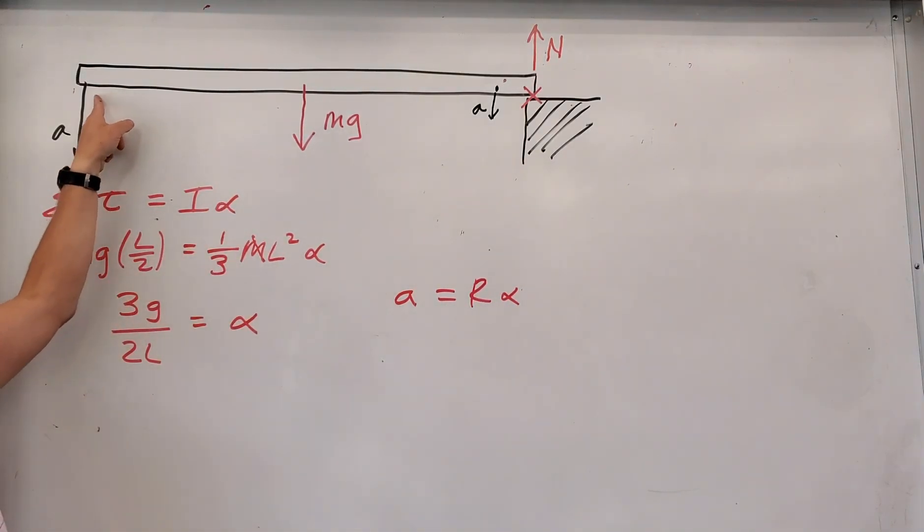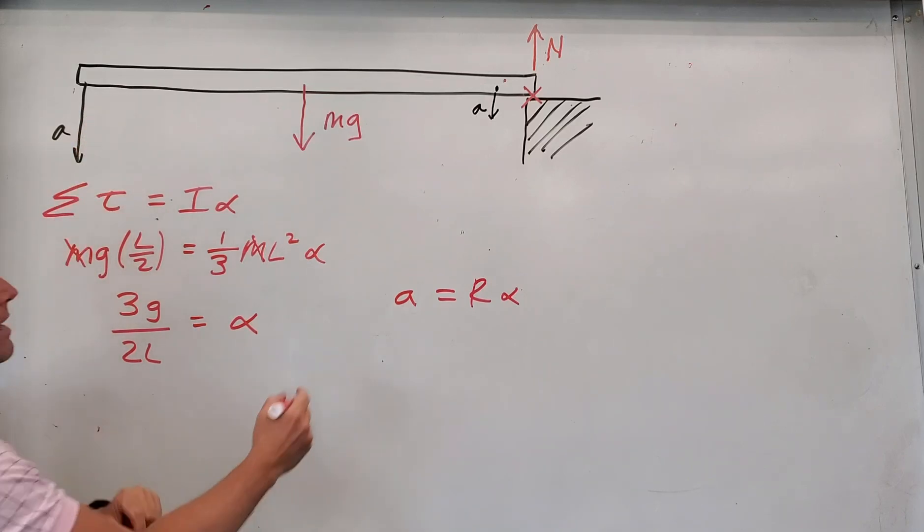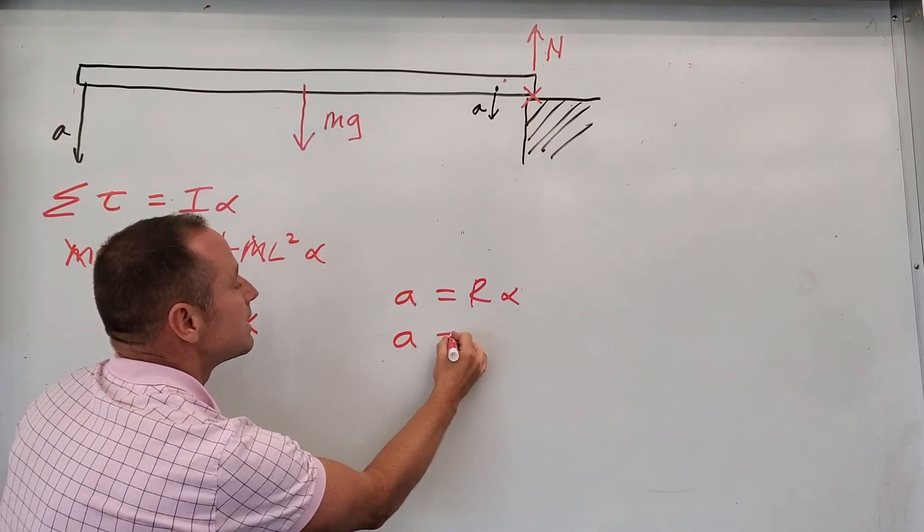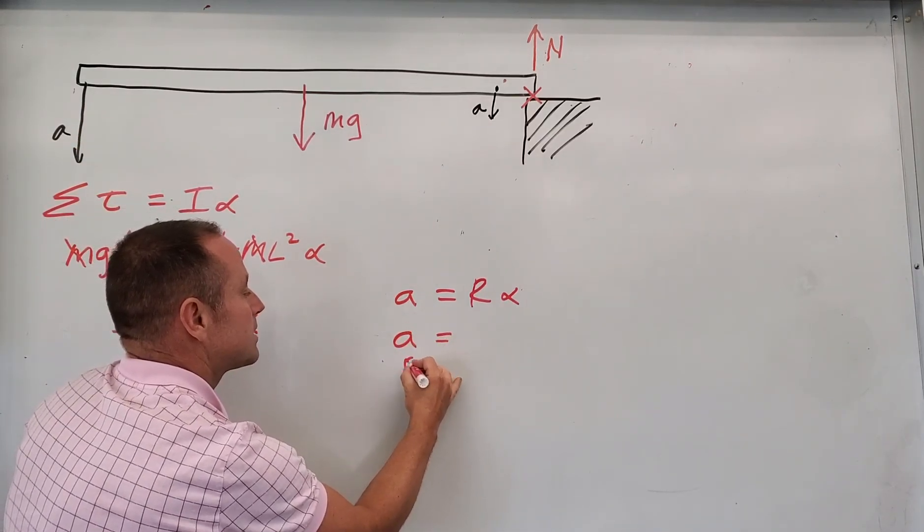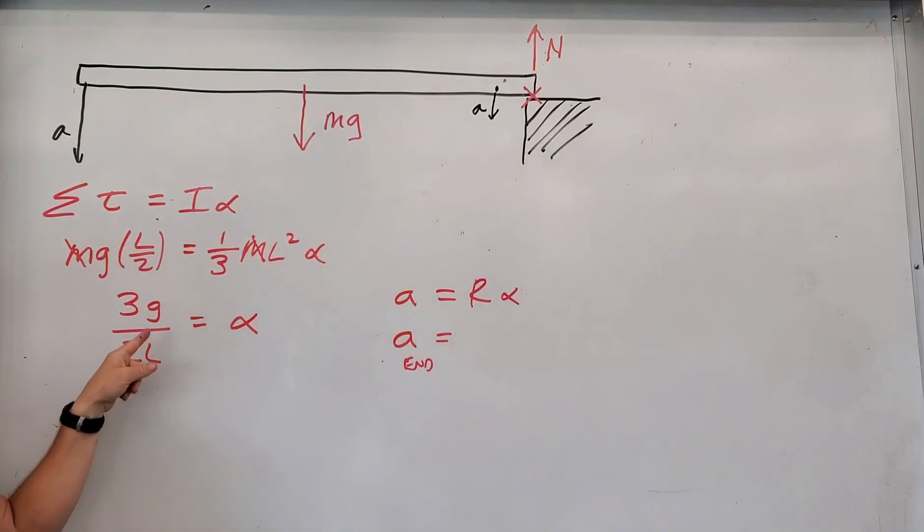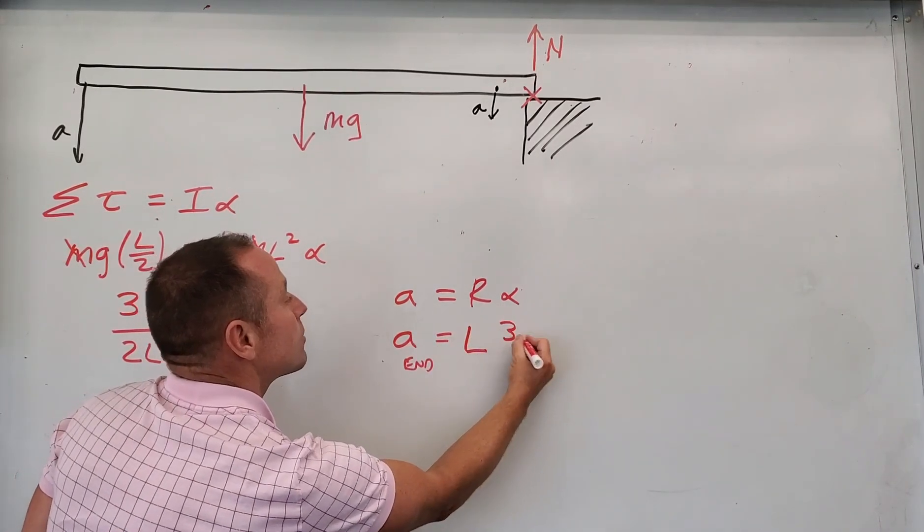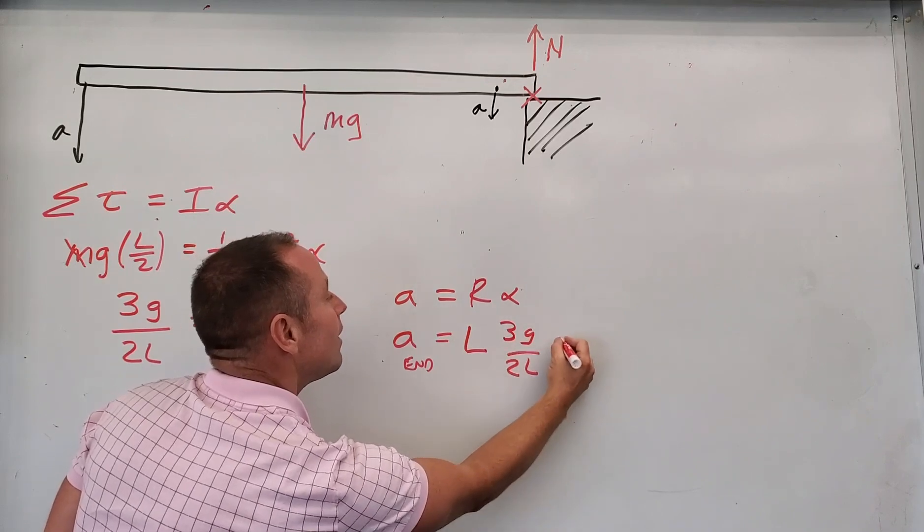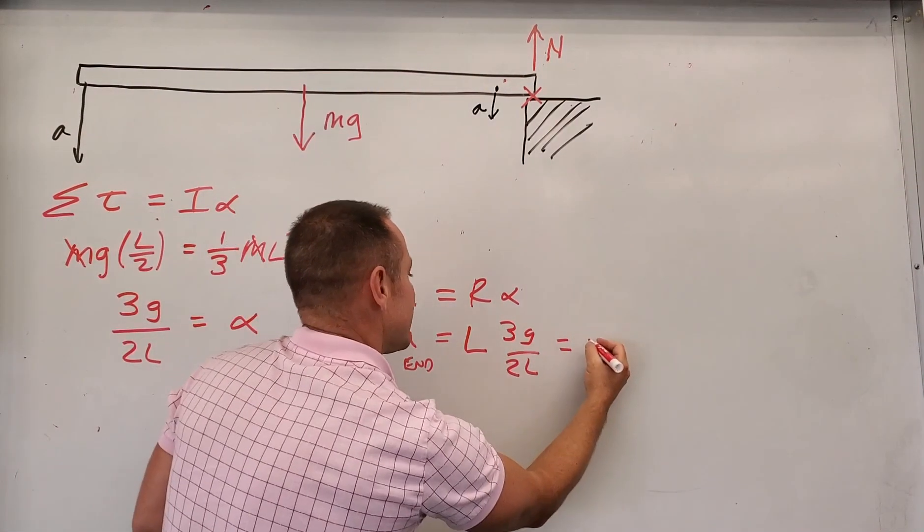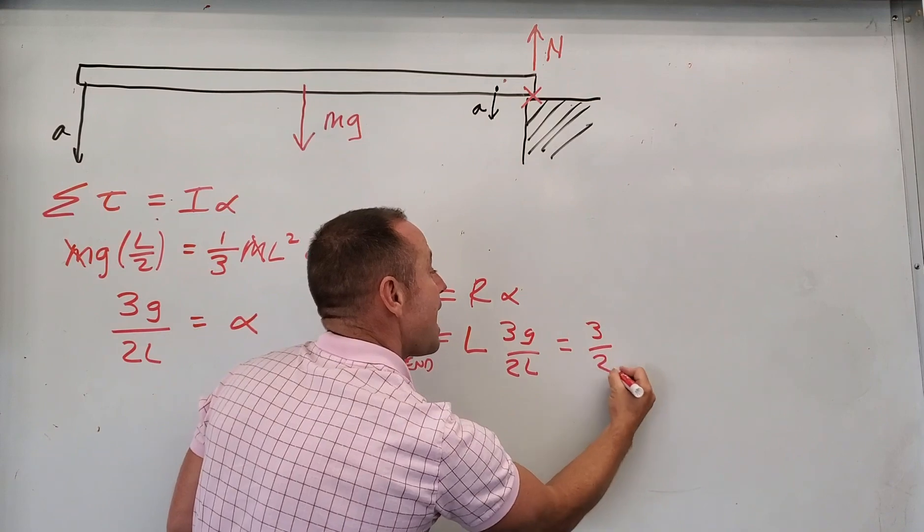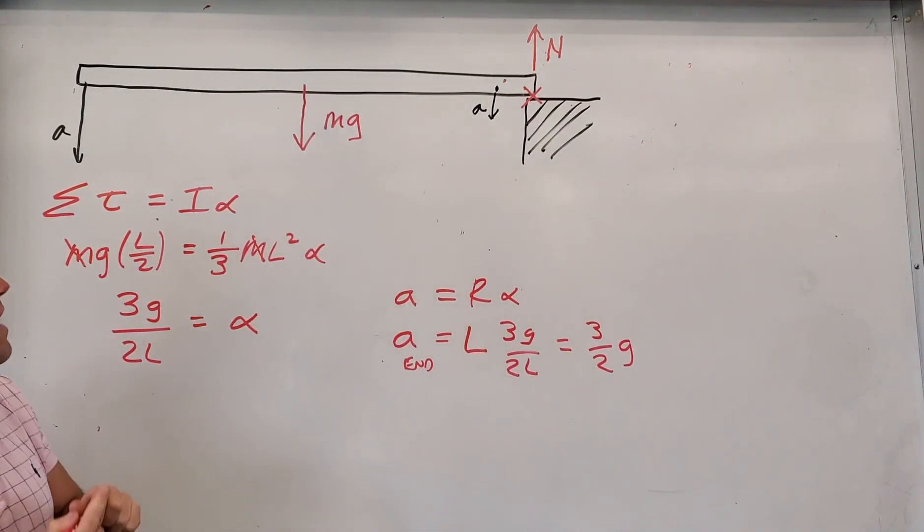Well, so if we want to find how fast the end is accelerating, the end of the stick is going to accelerate with l times 3g over 2l, which is going to give you an acceleration of 3 halves g, which is actually faster than g.